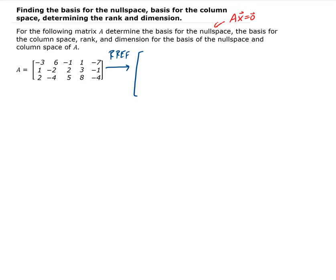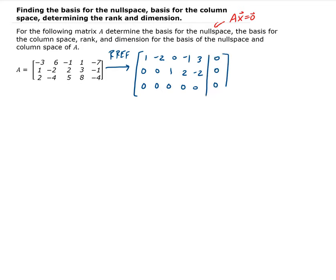So we're going to get 1, negative 2, 0, negative 1, 3, and then 0, 0, 1, 2, negative 2, and then the third row will be all zeros. I'm going to go ahead and augment the zero vector onto there.